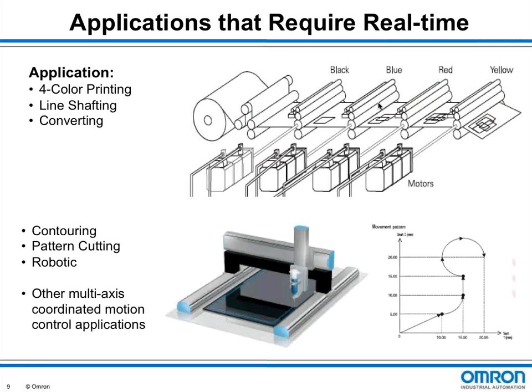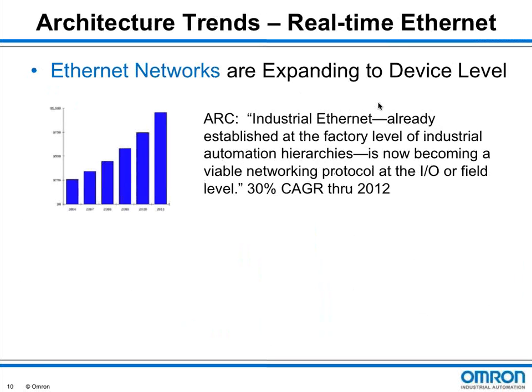Factory production is not just about the precise control of motion — it's about controlling machines in a line and keeping production going. This brings us to the architecture level of machine control. There are two trends further pushing real-time Ethernet: first, Ethernet networks are expanding to the device level, as noted by the Automation Research Council, which says industrial Ethernet is now becoming a viable networking protocol at the I/O or field level.